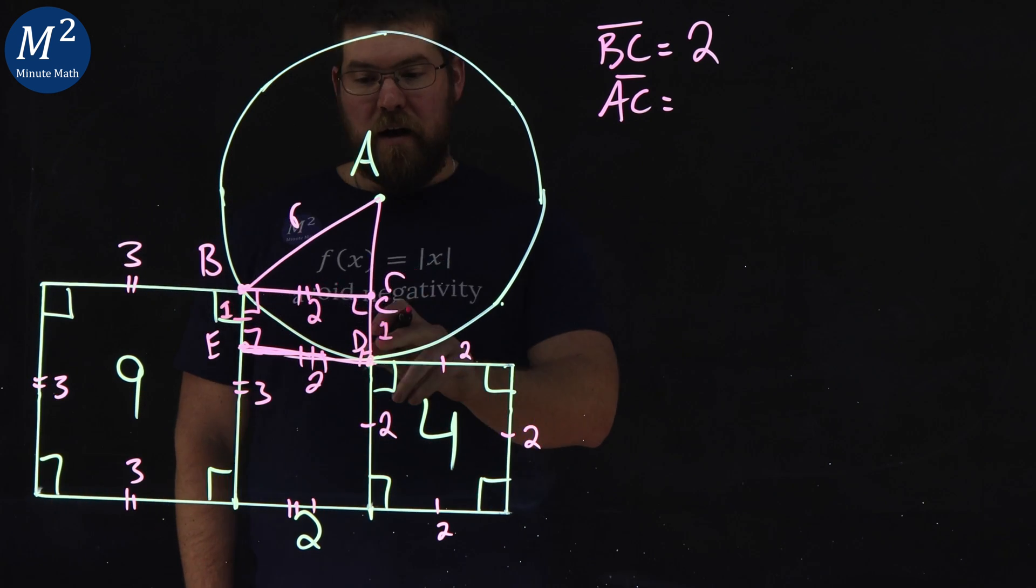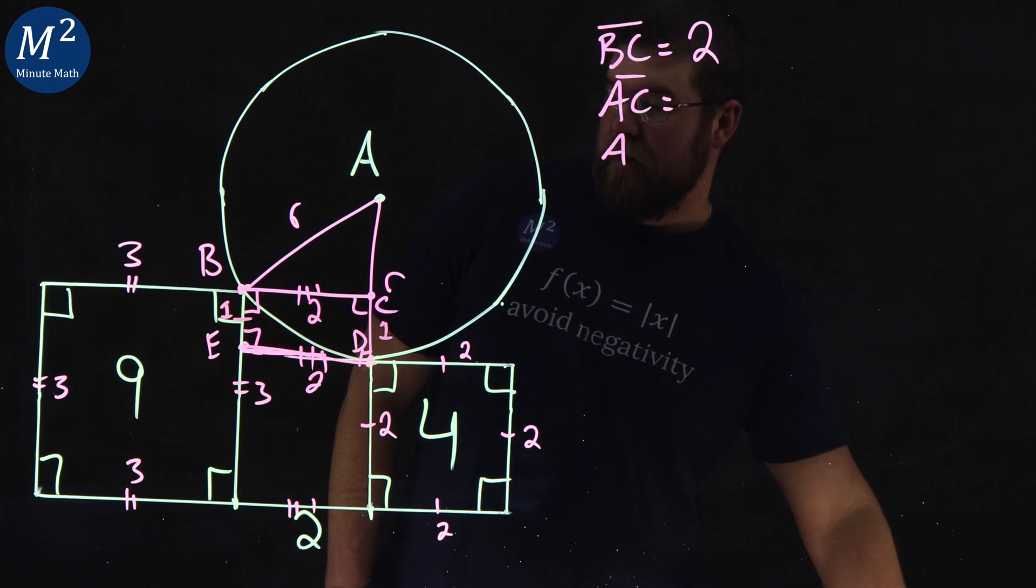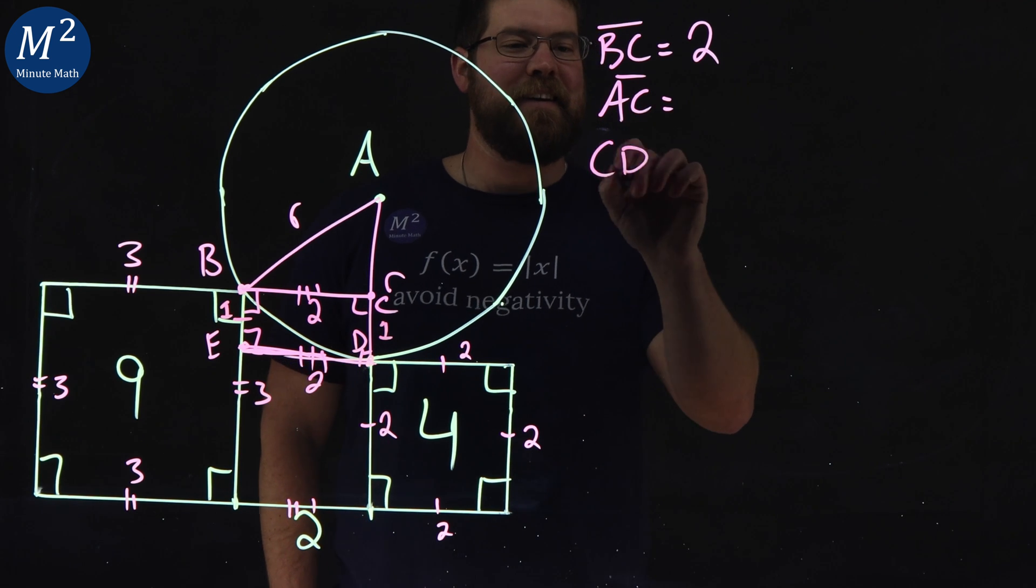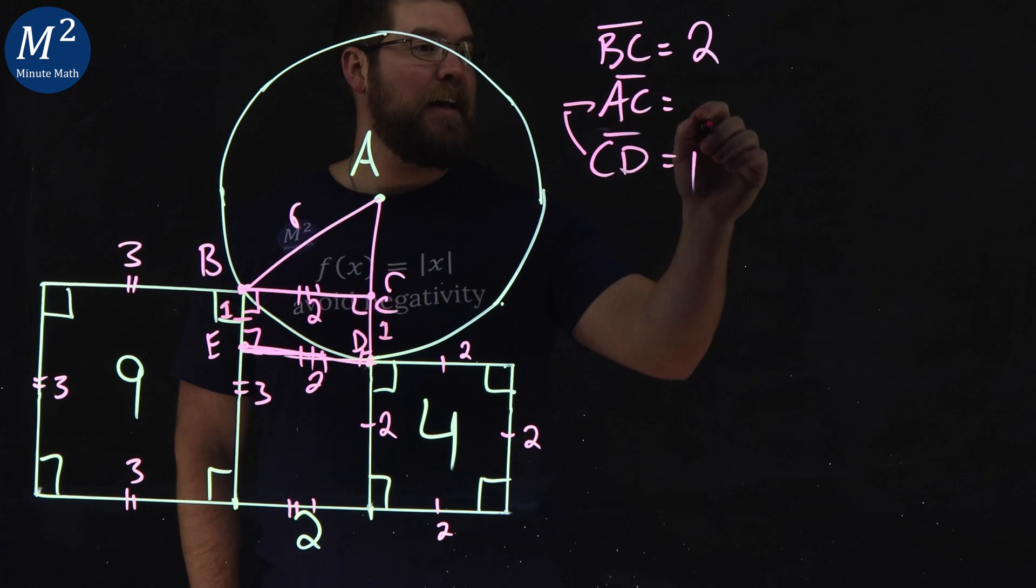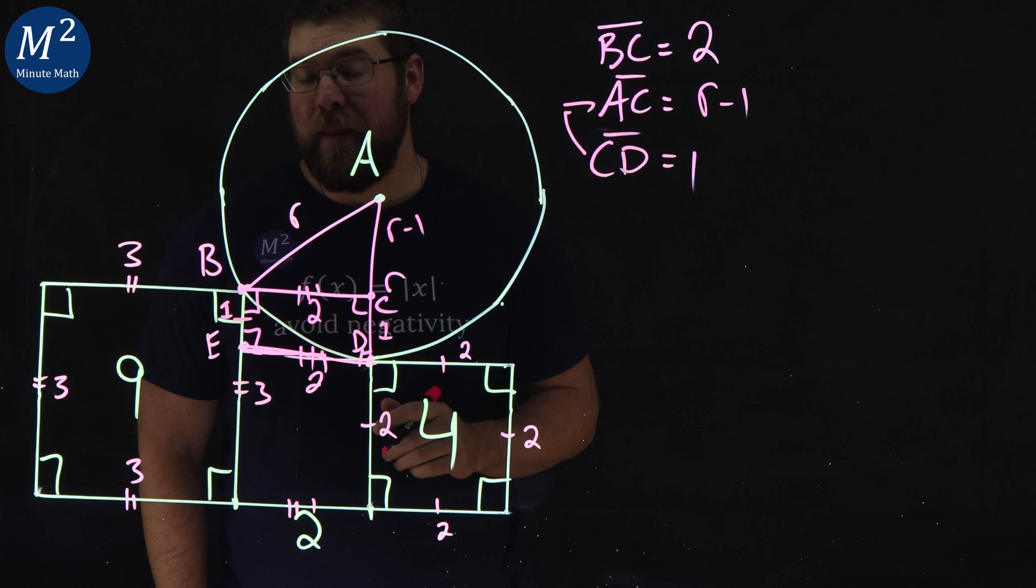We subtract that and this becomes one. So AC, we want to find out, we also want to find out CD. CD has a length of one, making AC has a length of R minus one, right there.